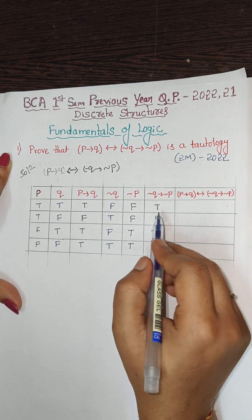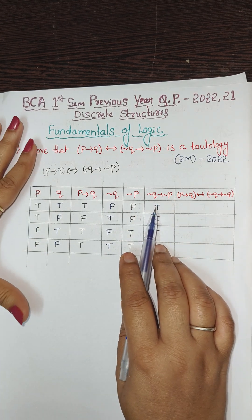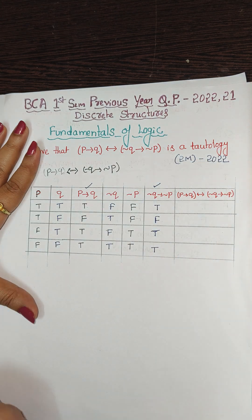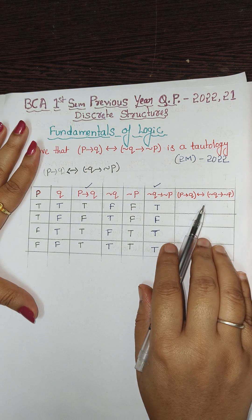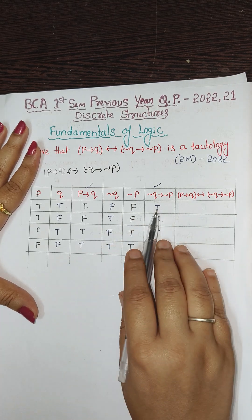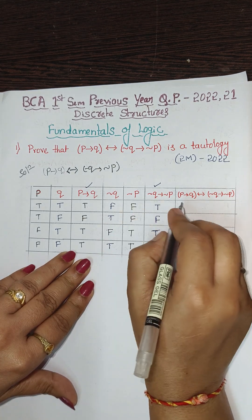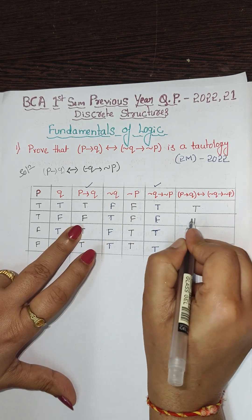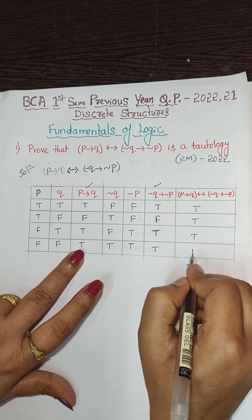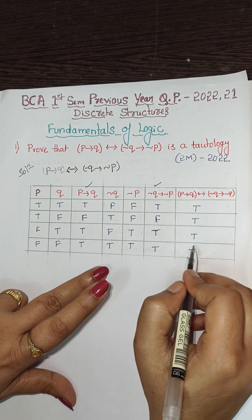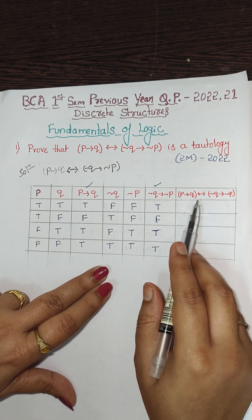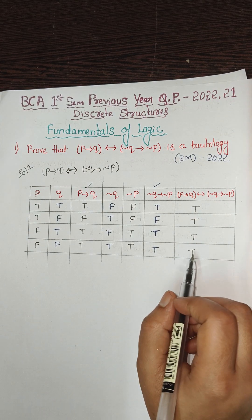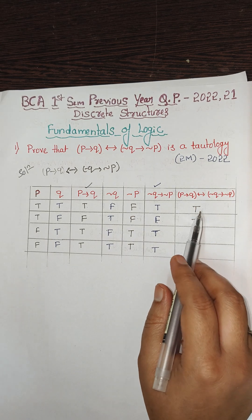So for ¬q→¬p, T→F is false and all remaining are true. Now the biconditional of (p→q) ↔ (¬q→¬p): a biconditional is true when both propositions have the same value — both T or both F. Comparing the two columns row by row: TT → T, FF → T, TT → T, TT → T. The last column is all T.